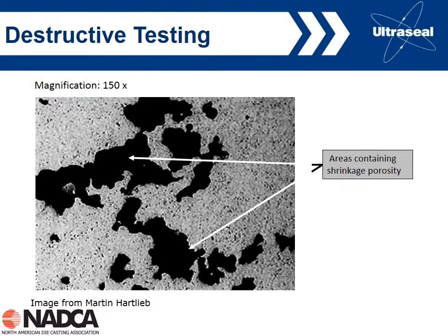We can also zoom in and look really close. With the naked eye it's kind of difficult to determine whether porosity is shrinkage or gas. But if we look at higher magnification and zoom in, we can clearly see that it's jagged and therefore formed late in the solidification process — and therefore most likely shrinkage. By zooming in we can get a much better idea about the shape and type of porosity.